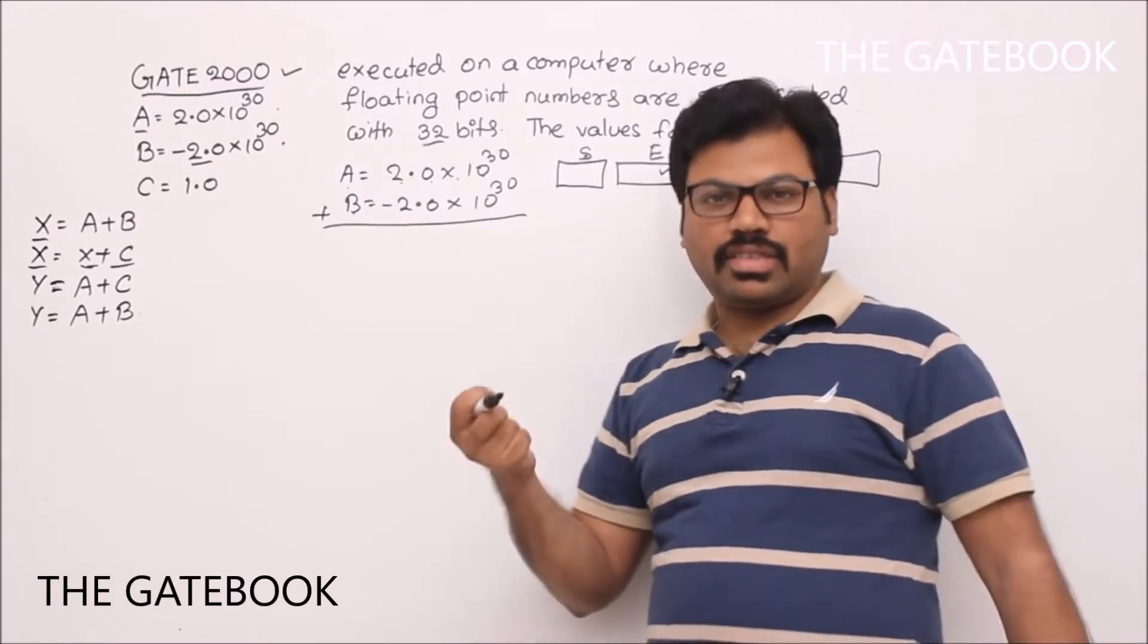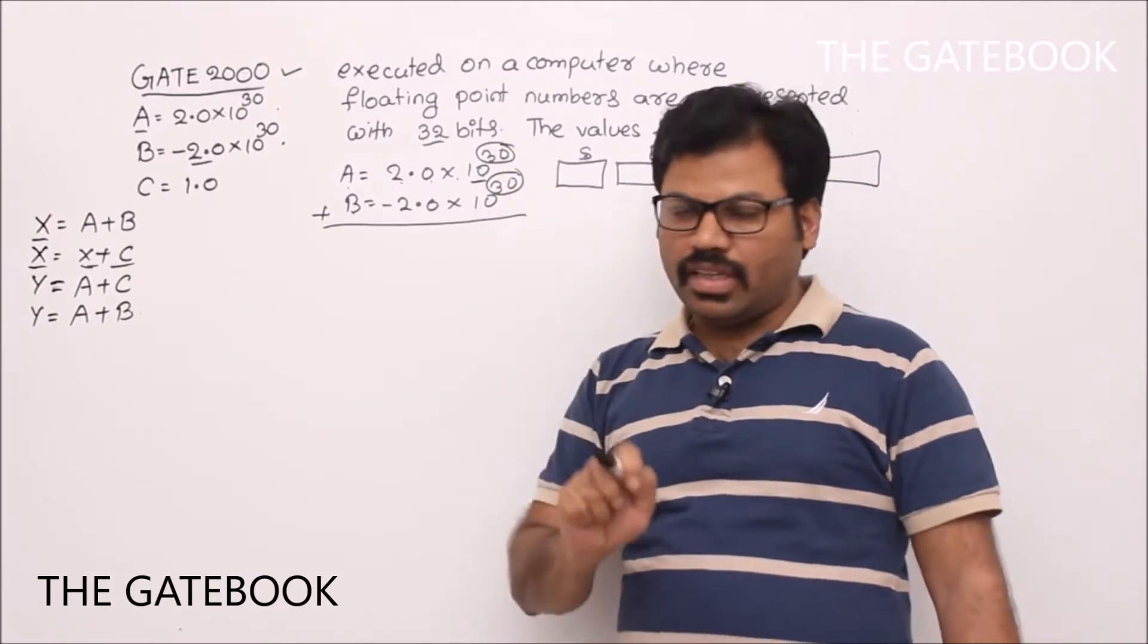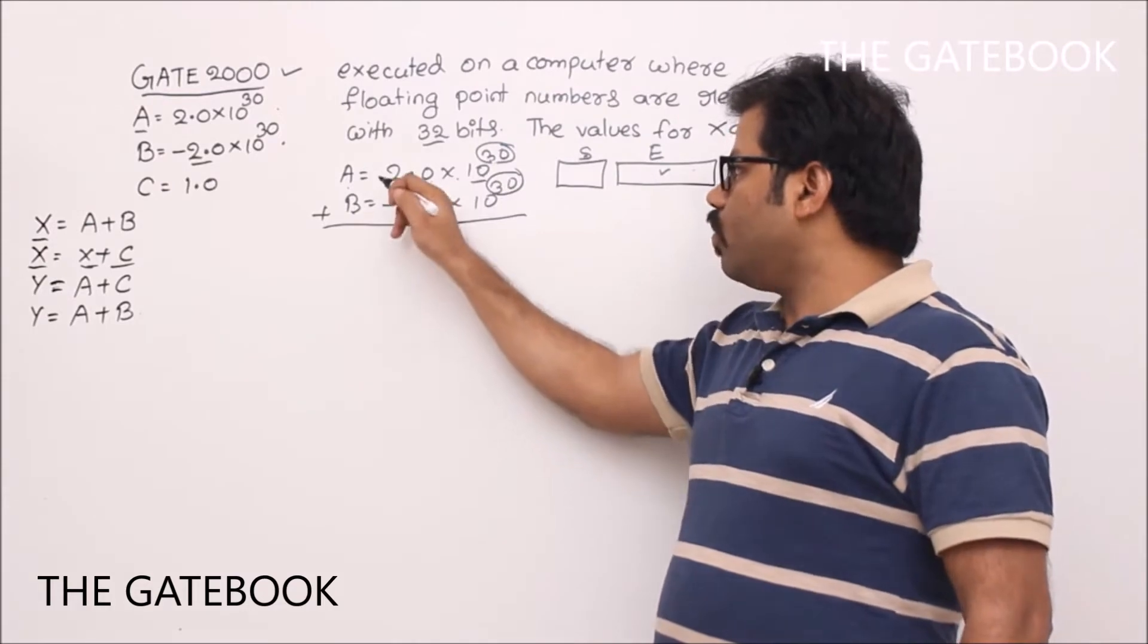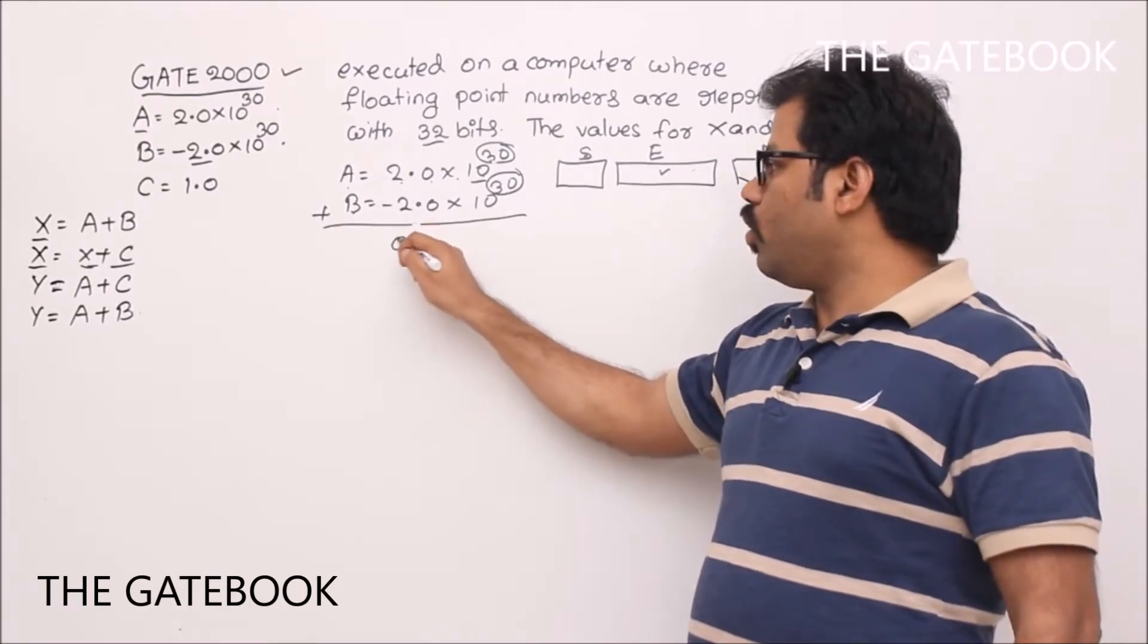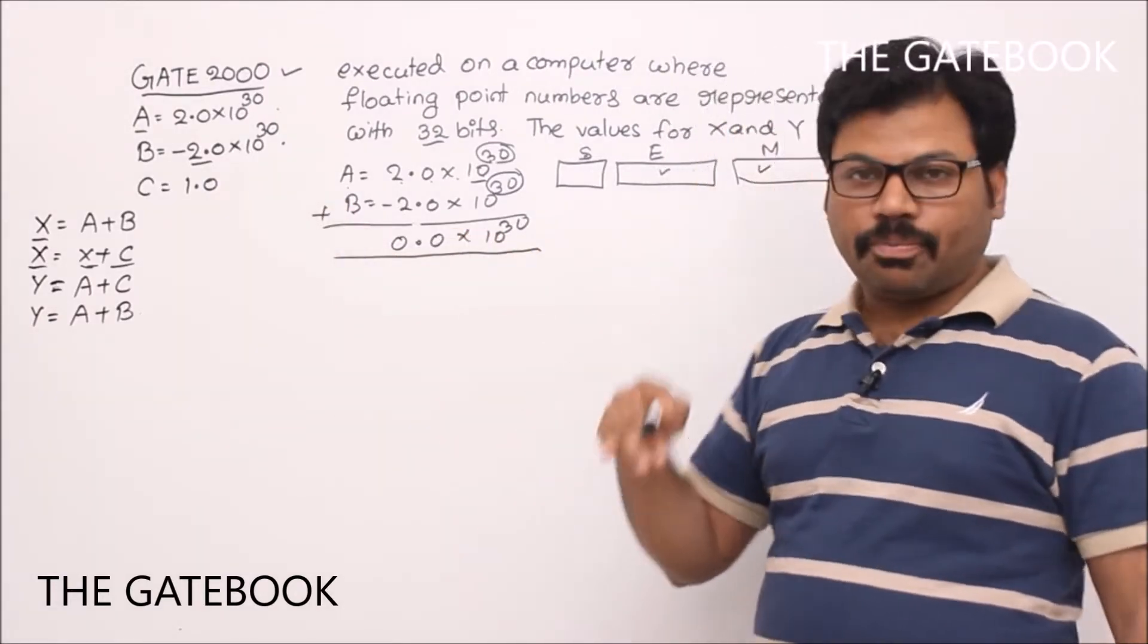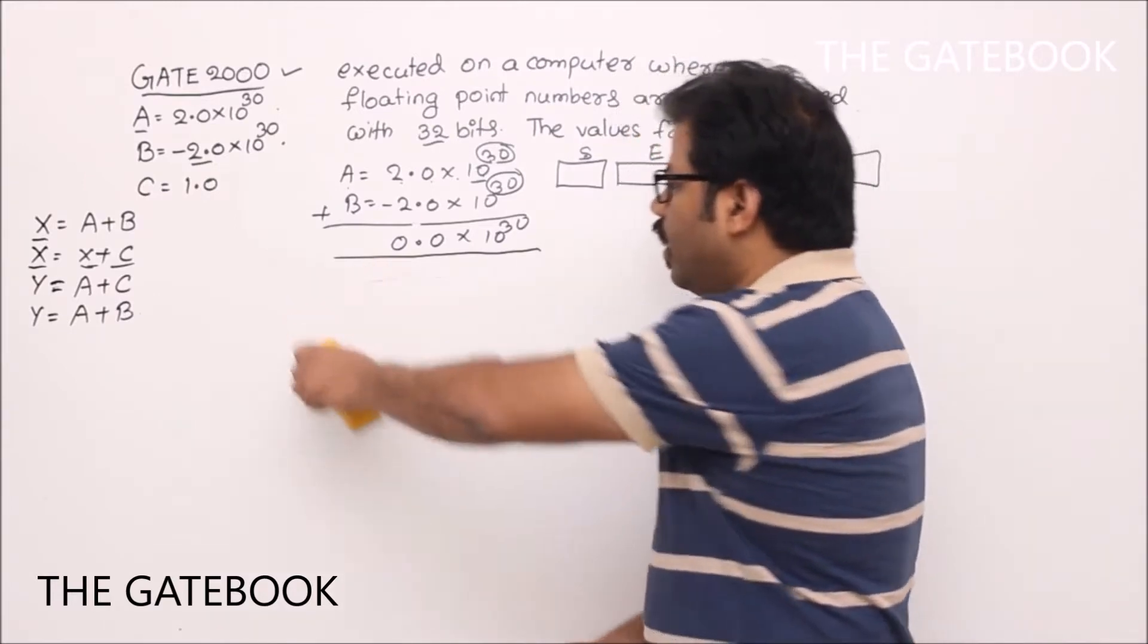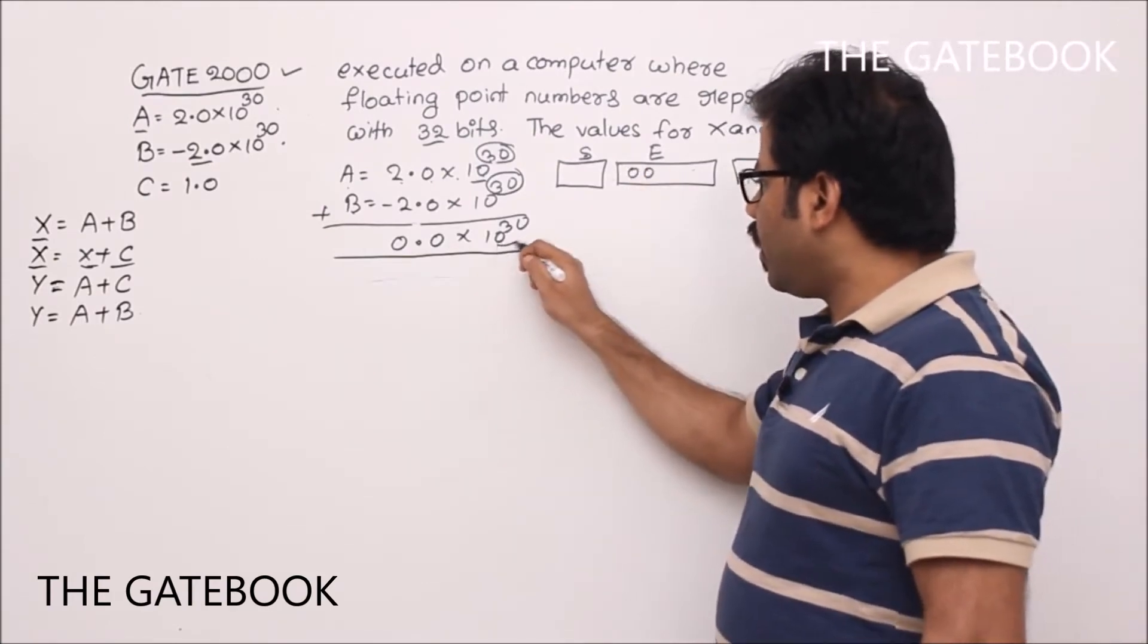Now, recall the subtraction algorithm. In the subtraction algorithm, first we will see exponent bit, right? So exponents are same. Whether they are represented in XS127 doesn't matter because both are represented using same format. So easily we will understand that they are equal. Then we have to do what? Subtract mantissa. When you subtract mantissa, since the bit patterns are same, you are going to get 0.0 into 10 to the power of 30.